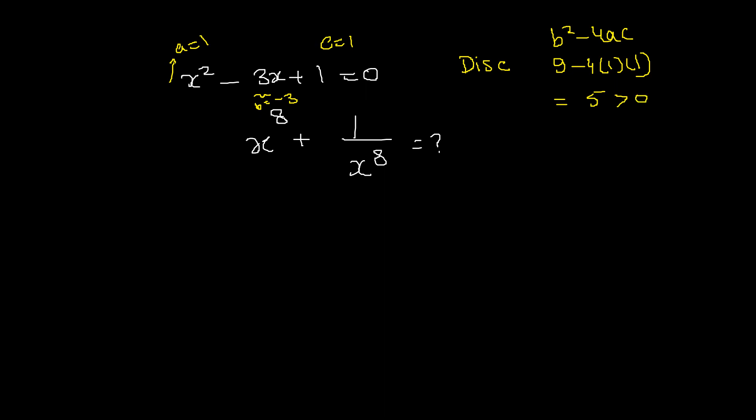So the trick is to just divide the whole equation by x. Then you will get x - 3 + 1/x = 0. And from here you will get x + 1/x = 3.